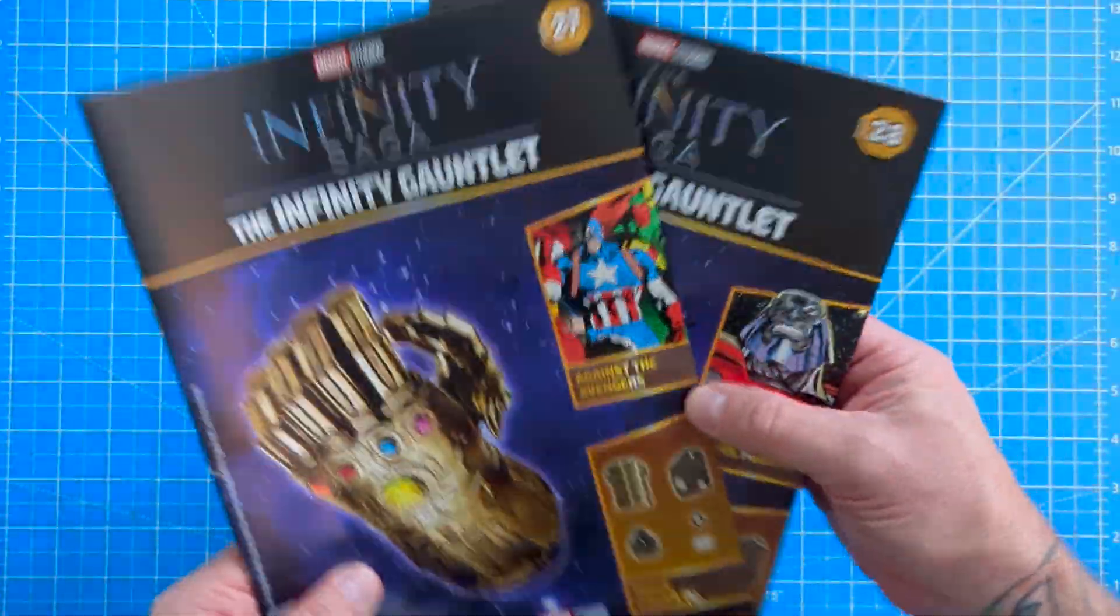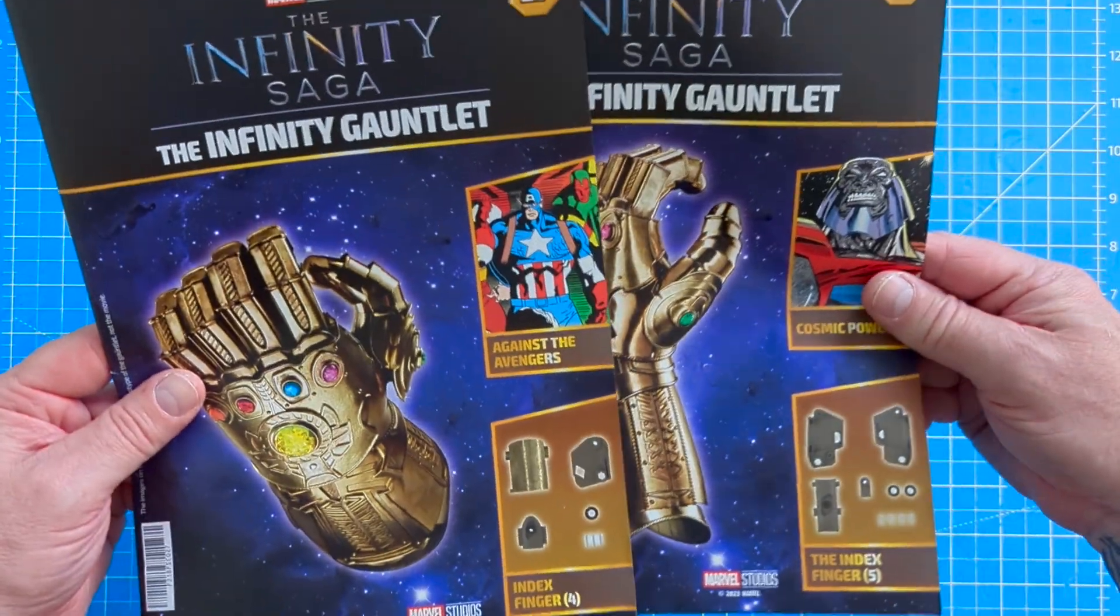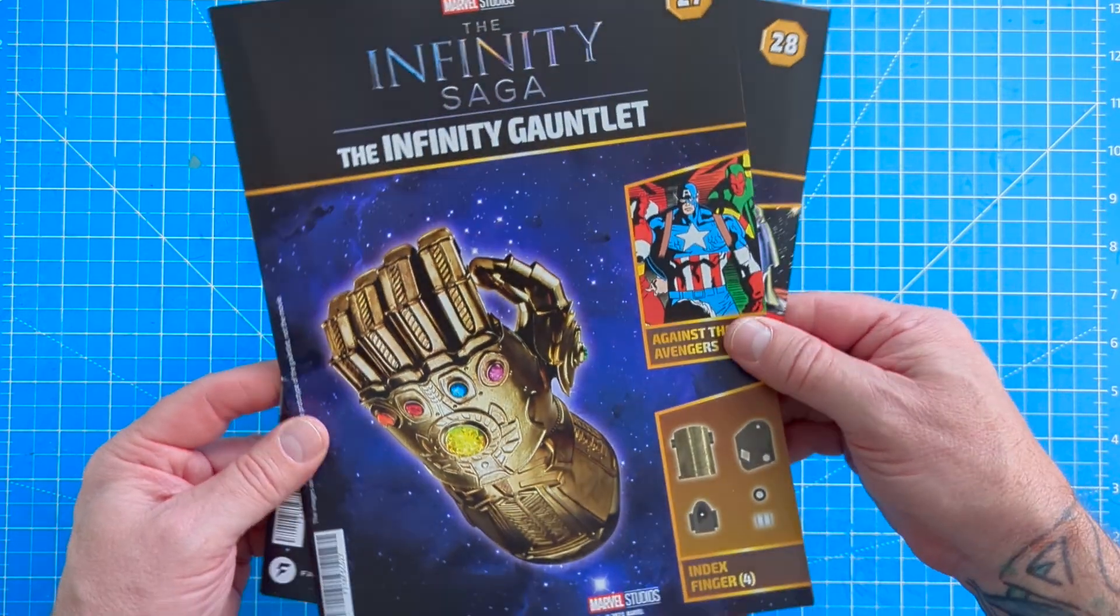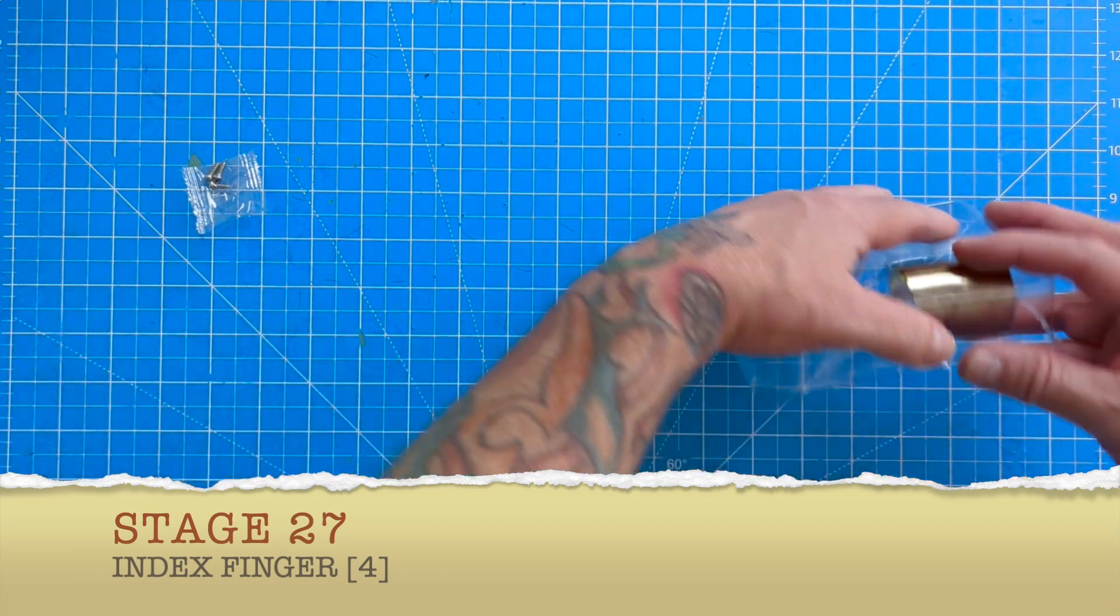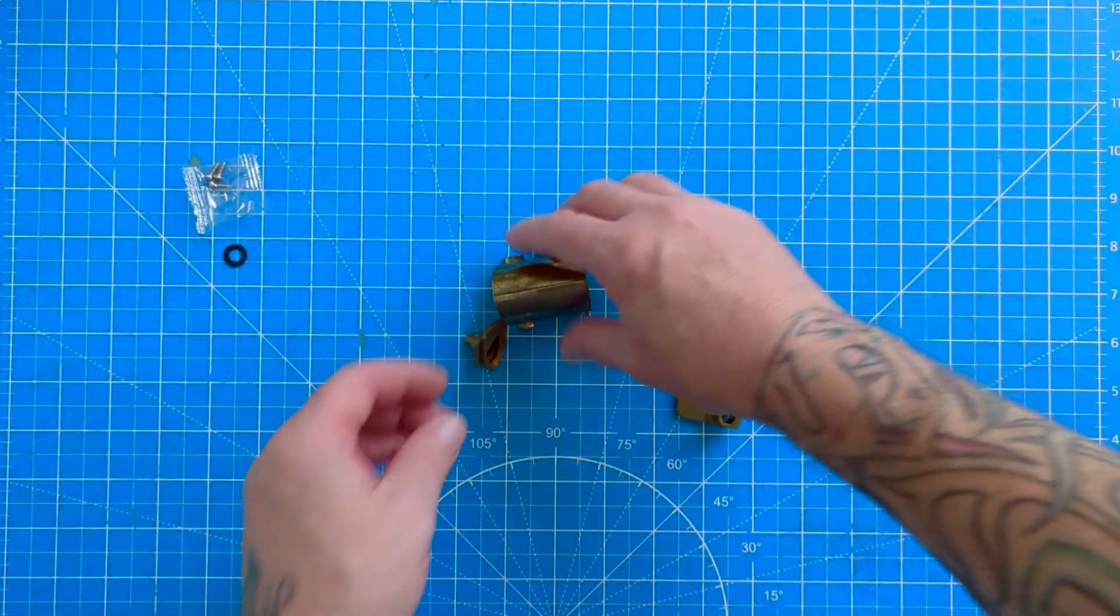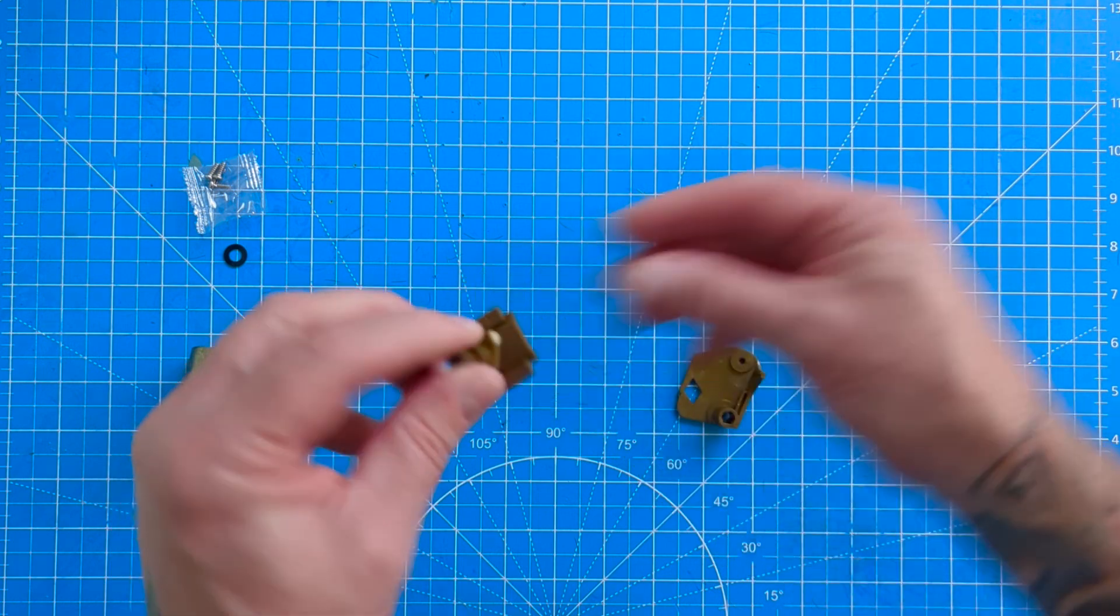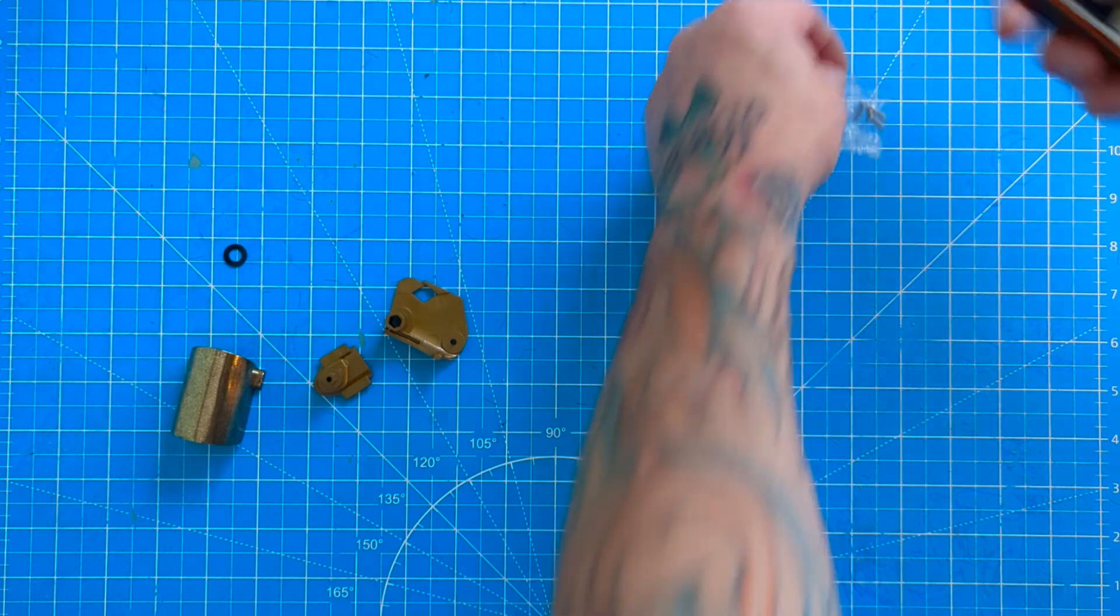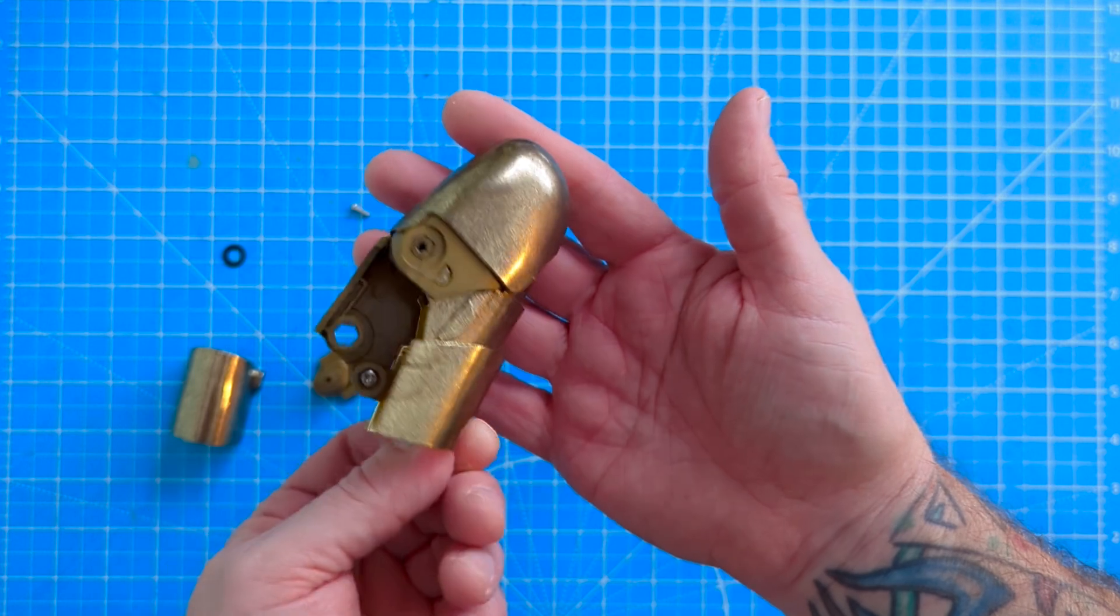Oh here we are again with the Marvel Infinity Gauntlet from the Infinity Saga stages 27 and 28 today. Let's crack on and see what's in 27. You've got some silver screws there. Got a washer, don't lose that. This piece here which is metal and then a couple of plastic pieces there. Get the screws open for preparation. Obviously we need to bring over the finger that we've been working on.